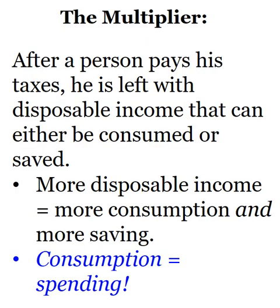We've seen that disposable income is the income the household receives plus any government transfers they get from the government, minus tax revenue. So after that household or that person pays the taxes, whatever is left over is considered disposable income. With disposable income, there's two major things that you can do: you can spend it, which is called consuming or consumption, or you can save it.